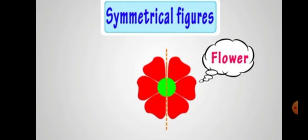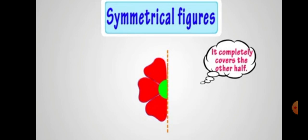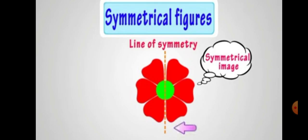Here are some more examples. Here we have a flower. Again, a dotted line is there. This dotted line is known as the line of symmetry. This line of symmetry divides this flower into two equal parts. Here you can see this completely covers the other half of the flower. So it means this flower is symmetrical in shape.